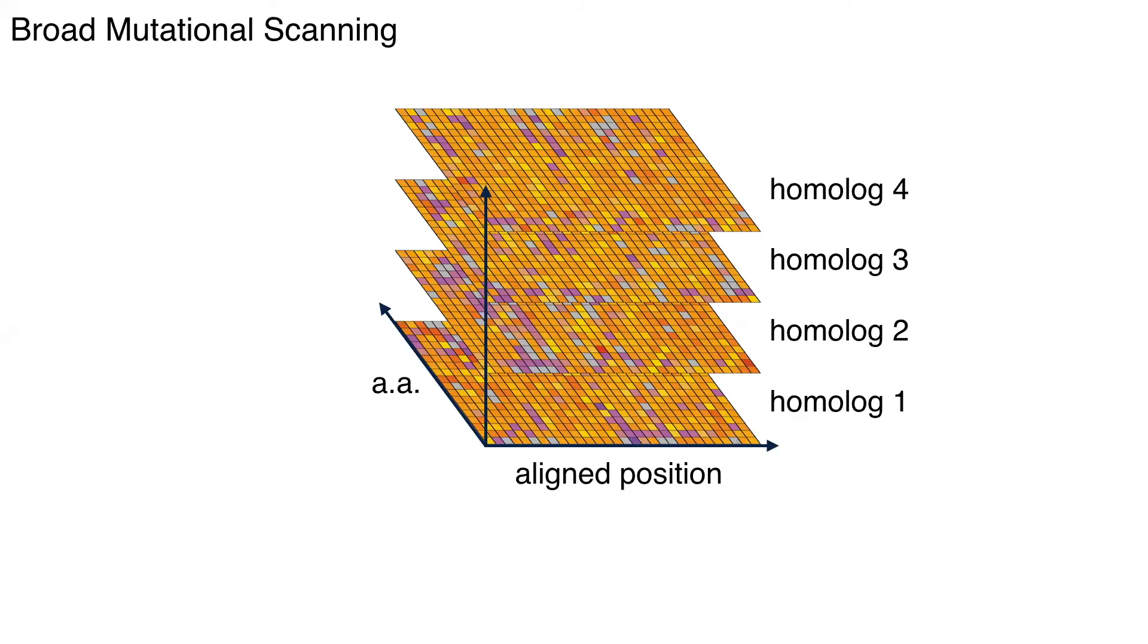And so to make a long story short, we're primarily used to these heat maps from deep mutational scanning, where we have the potential fitness score for every amino acid at every position. We've now added another dimension onto this, where we've taken all of these home logs, and then we've aligned them together, and then we put that in as another dimension.